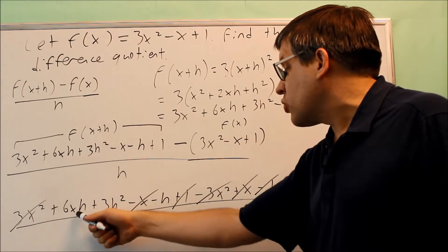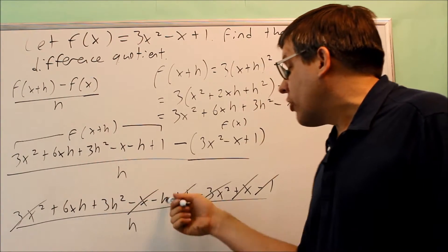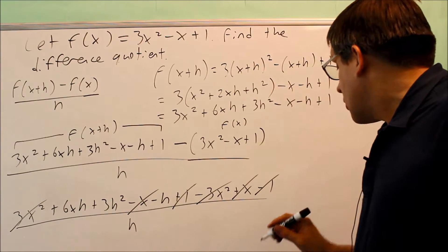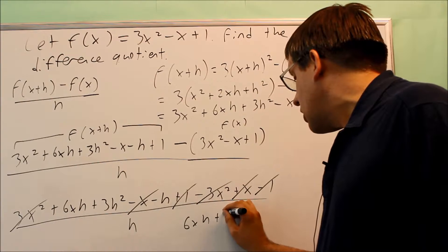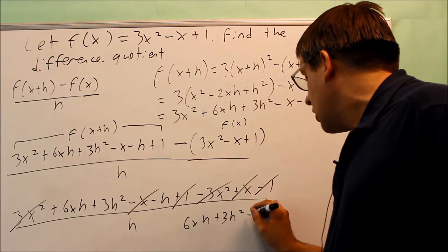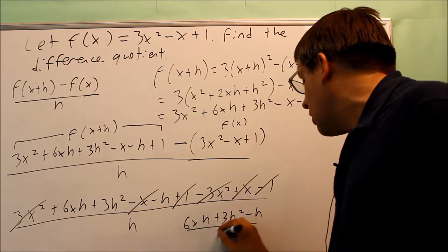Notice the terms we have left here, all of them have an h in it. So when I write that out, I get 6xh plus 3h squared minus h. All that's going to be over h.